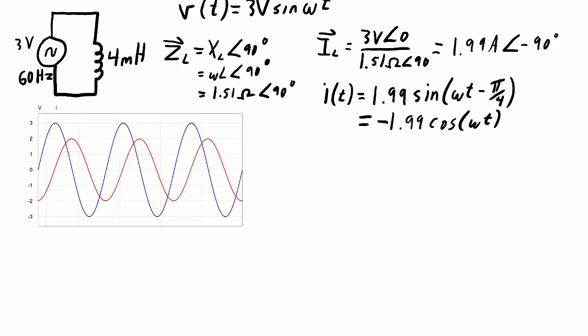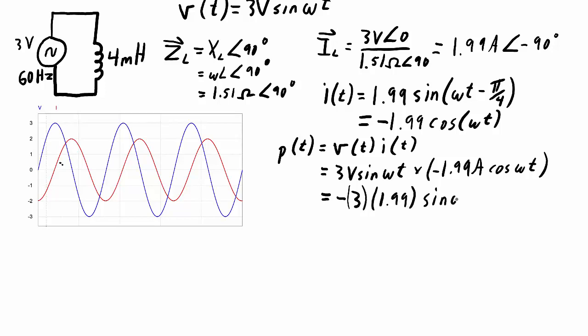The amplitude of the current is about 2 amps, and the amplitude of the voltage is about 3 volts. This video though is about power to the inductor. Instantaneous power, so power as a function of time, is equal to the voltage times the current. I know what those two equations are: 3 volts sine ωt times negative 1.99 amps cosine ωt. I'm going to rearrange these equations and get negative 3 times 1.99 times sine ωt times cosine ωt.